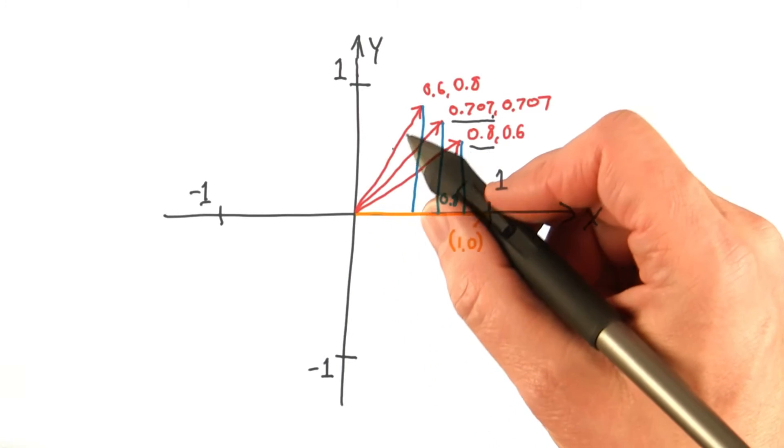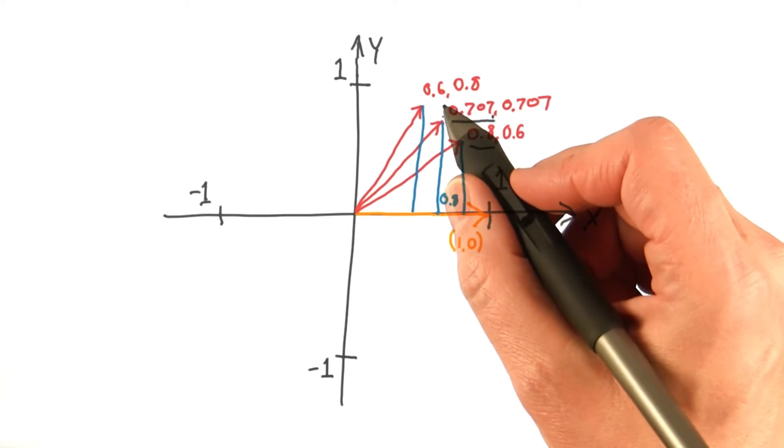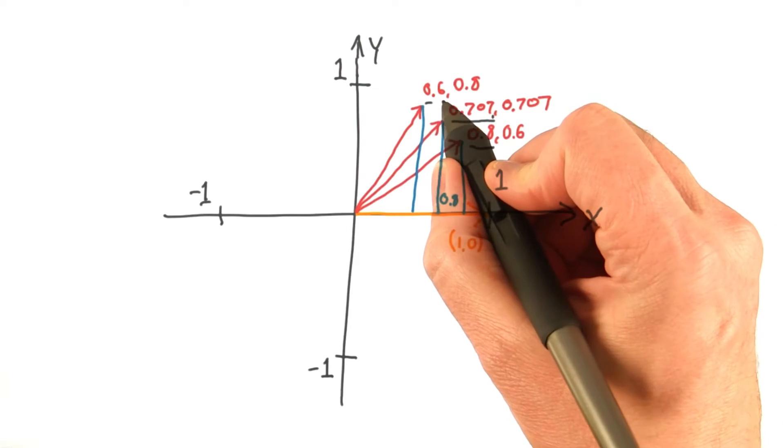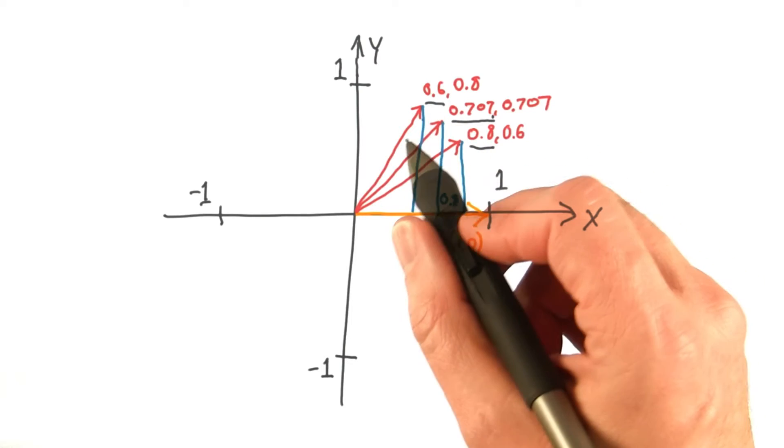With the vector 0.6, 0.8, the x component is 0.6, and that's the dot product. It's always the x component.